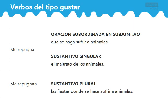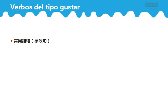老师还造了个句子：me repugnan las fiestas donde se hace sufrir animales. 主语是名词复数 las fiestas，我很讨厌那些会伤害动物的节日。其中有一个西班牙备受争议的节日就是奔牛节，以及一些动物比赛也是备受争议的。这里 donde 引导了一个地点状语从句，起到补充说明的作用，可以拿掉也可以不拿掉。